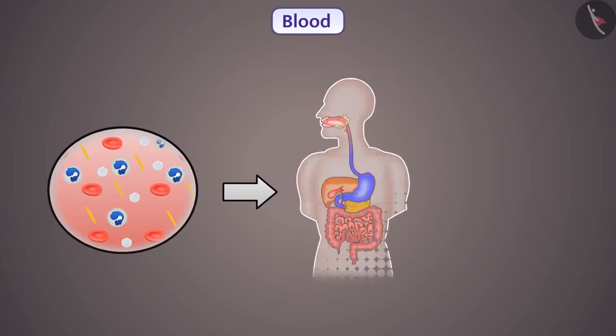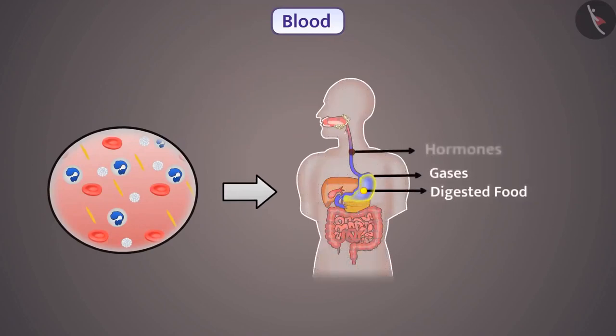We know that blood transports digested food, gases, hormones and waste products from one part to another part in the body. That means it performs the function of transportation.